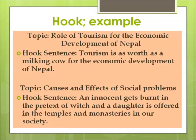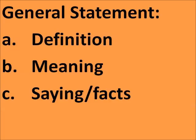For example, for the topic 'Role of Tourism for the Economic Development of Nepal,' the hook sentence is: 'Tourism is as worth as a milking cow for the economic development of Nepal.' I have not defined tourism here — I have written something related to it that can really attract attention. Another example: for causes and effects of social problems, the hook is 'an innocent gets bound in the pretext of which a daughter is offered in the temple.'